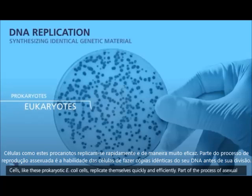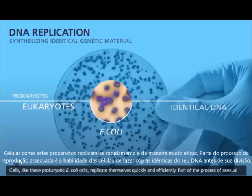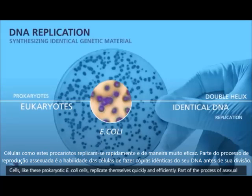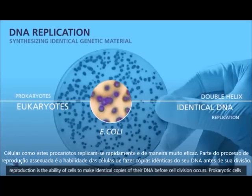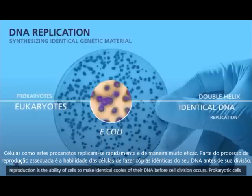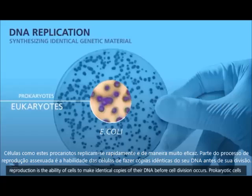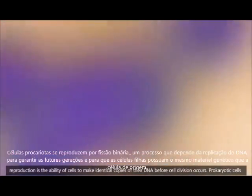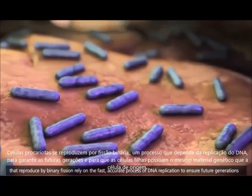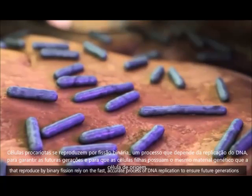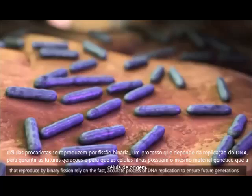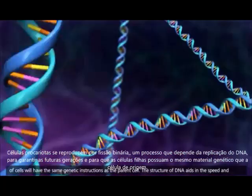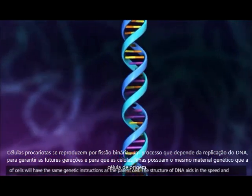Cells like these prokaryotic E. coli cells replicate themselves quickly and efficiently. Part of the process of asexual reproduction is the ability of cells to make identical copies of their DNA before cell division occurs. Prokaryotic cells that reproduce by binary fission rely on the fast, accurate process of DNA replication to ensure future generations of cells will have the same genetic instructions as the parent cell.